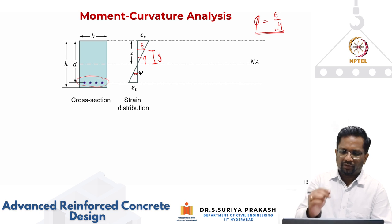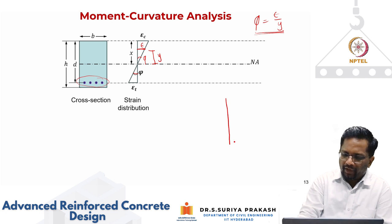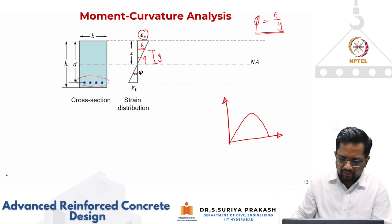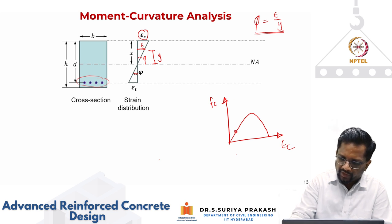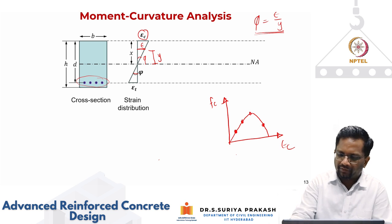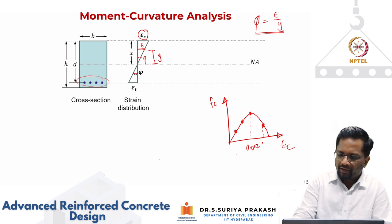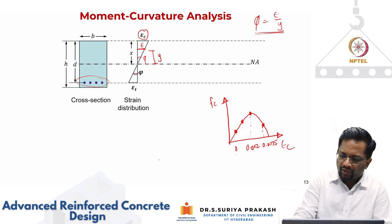This is your strain distribution. One thing to note is that I am going to keep changing epsilon_c. You can see, going back to your parabolic curve, this is the kind of thing you get. So depending upon whether I am at this point, my strain at the top fiber is going to change. You can see that at 0.002 for concrete strength less than 40 MPa, at this location it could be 0.0035, or at this location it could be 0.001.